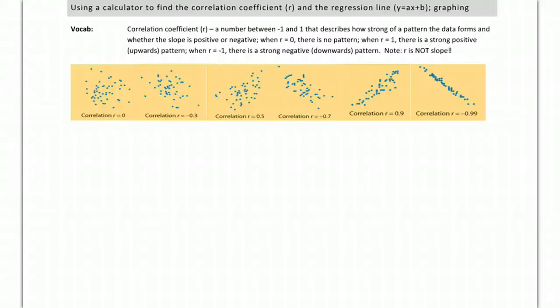Now let's look at how to calculate the correlation coefficient and the line of regression, and then go ahead and graph that line once we have it. Just to get a sense of what the correlation coefficient is, it's a number between negative 1 and 1.